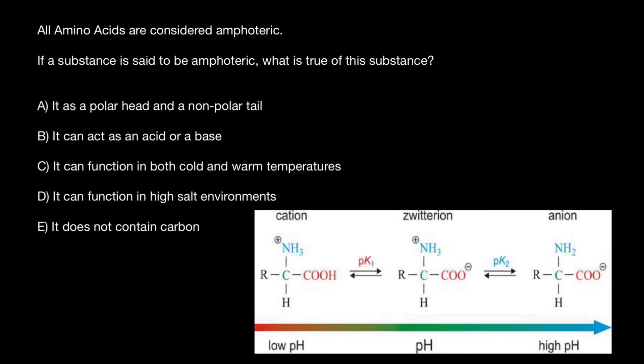And at the certain pH level, this amino acid can have both positive charge and negative charge, and we call this molecule zwitterion.